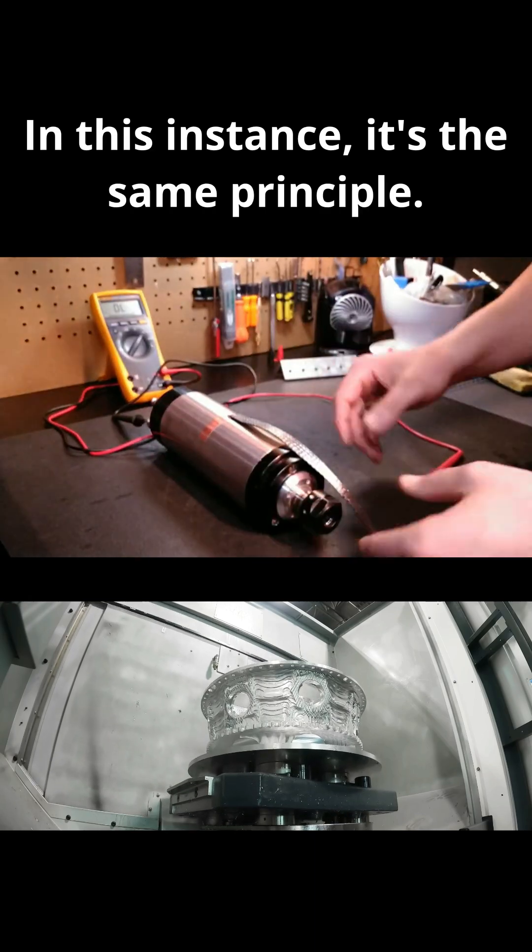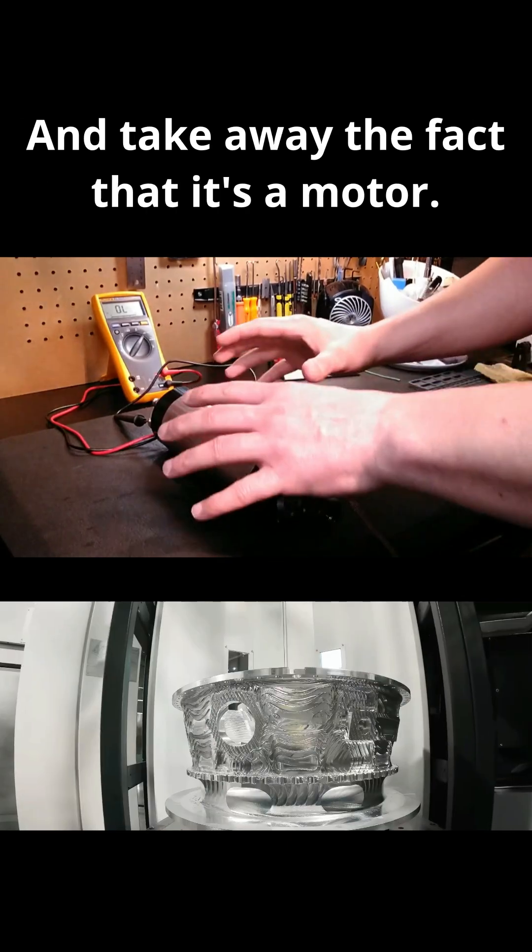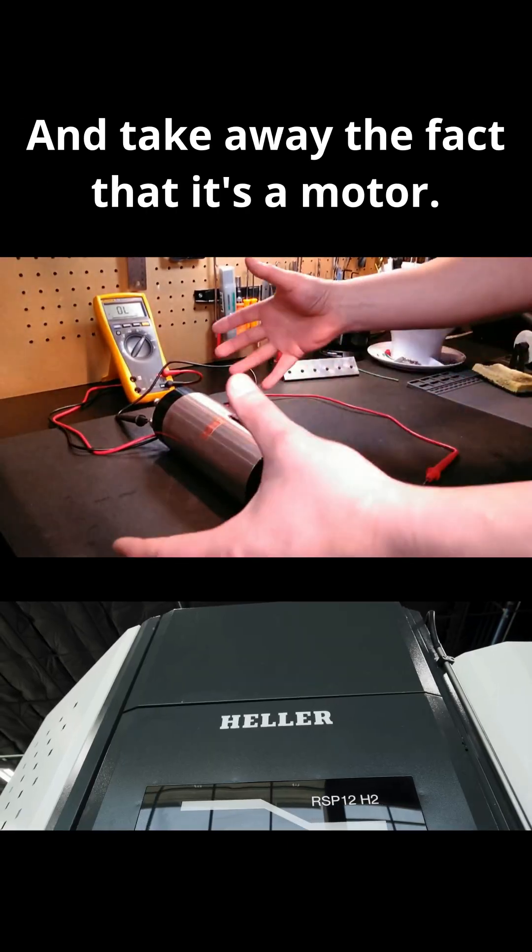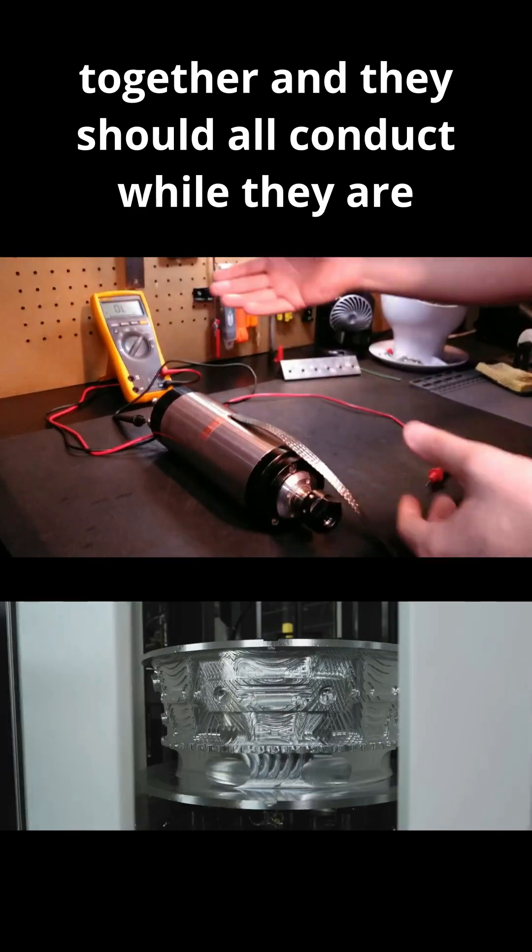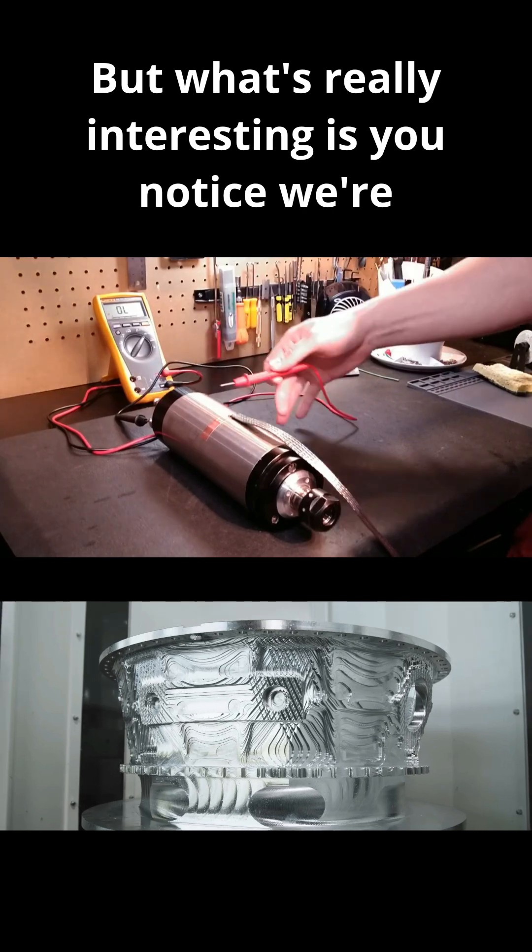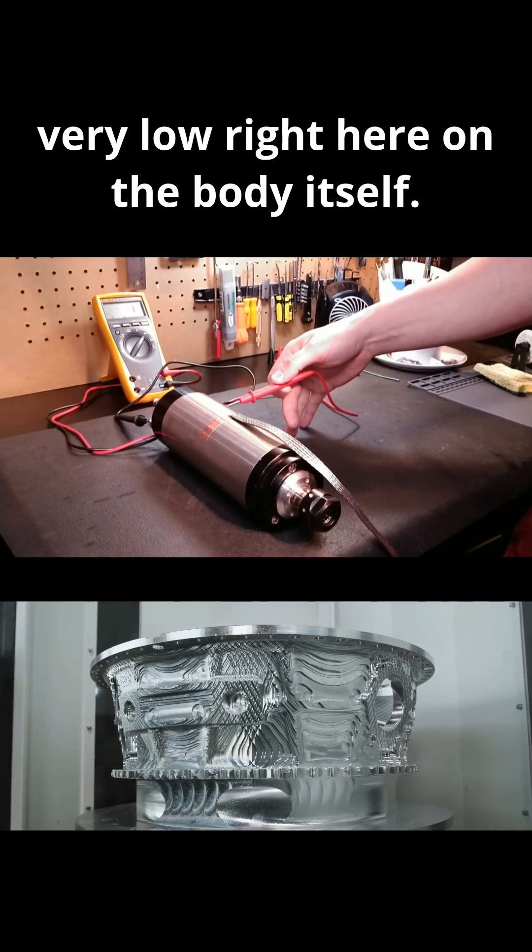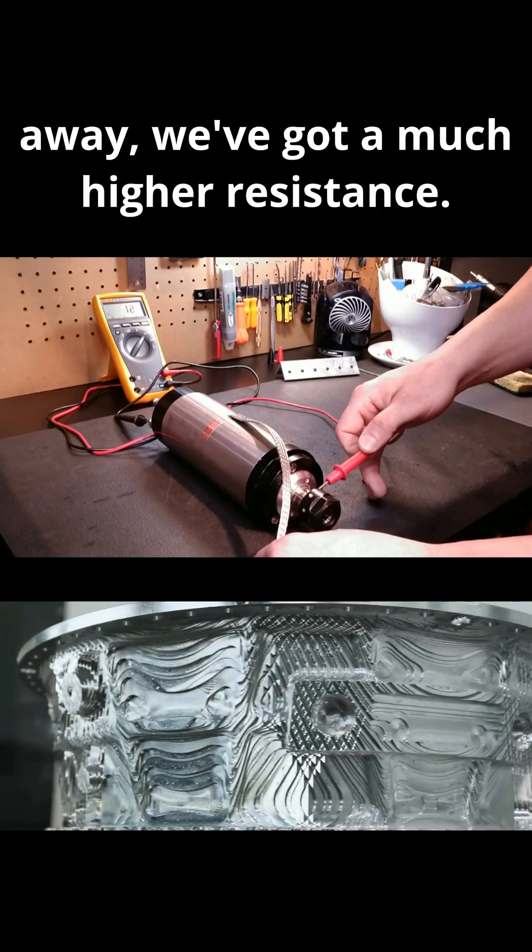In this instance, the same principle. We have the chuck, we have the spindle's actual shaft, and take away the fact that it's a motor—it's a bunch of metal parts that are assembled together and they should all conduct. While they are conducting, what's really interesting is you notice we're very low right here on the body itself, but yet as we come over here less than 12 inches away, we've got much higher resistance.